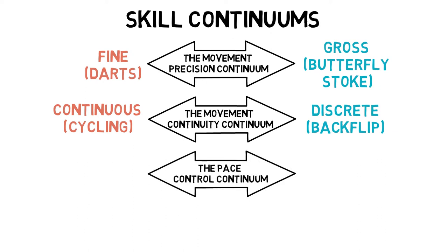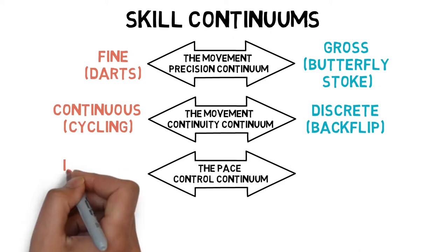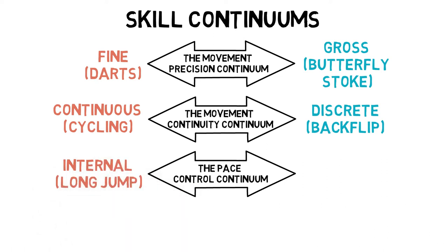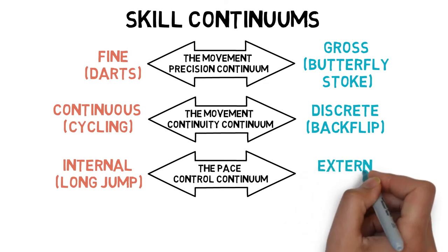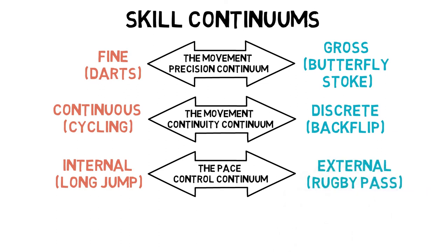The pace-control continuum deals with internal skills, which are self-paced such as a long jump, and external skills, which are controlled by other factors such as a rugby pass.